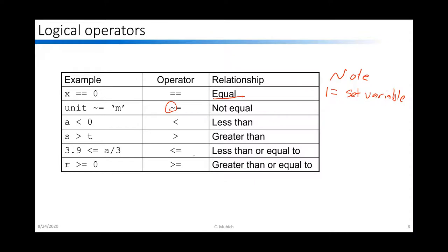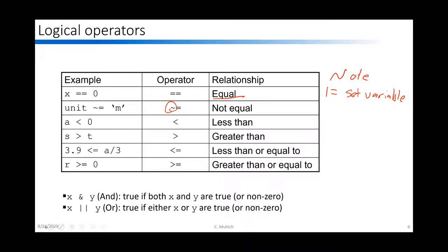Sometimes we want to look at multiple conditions. We may want to do an operation when x AND y are non-zero, or when x OR y is non-zero. We use the ampersand for AND, or double vertical lines (to the right of the bracket key on your keyboard) for OR. In this way we can string multiple logic operators together to make more and more complex conditions.